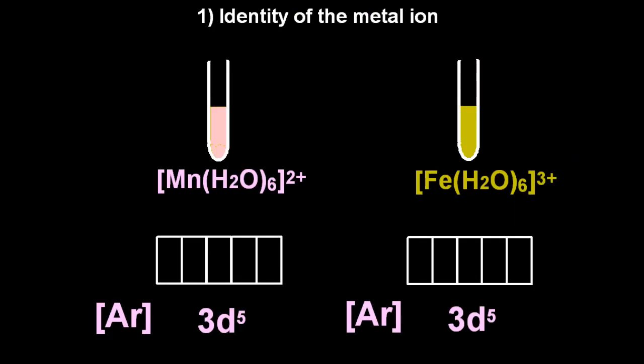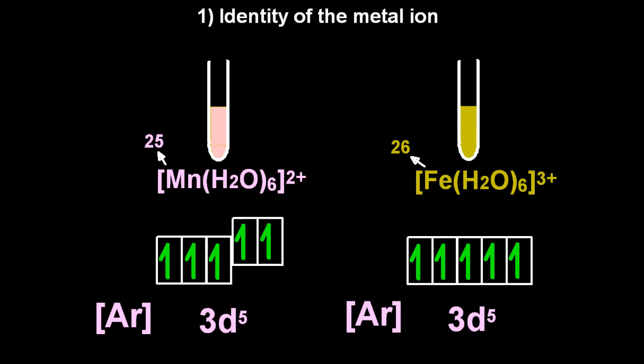So let's look at reason one, the identity of the metal ion. Well, both of these have a metal ion that are isoelectronic to each other. They have the same number of electrons in the same place. They are both argon 3d5. So the manganese has 25 protons, and the iron has 26 protons. And so the more protons there are, the more interaction there is with the ligands, and the bigger the split.